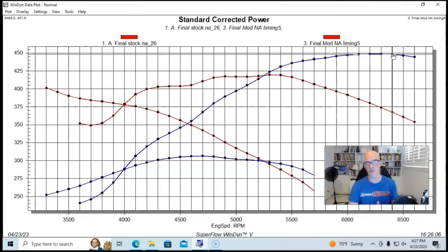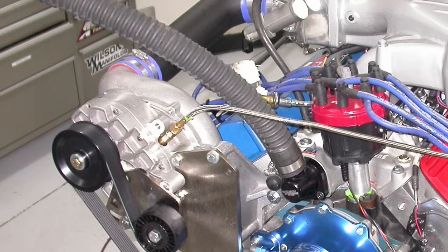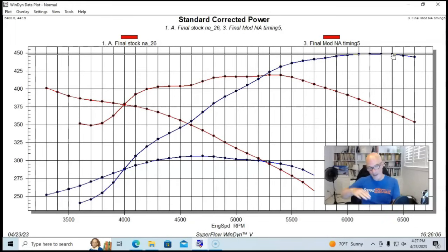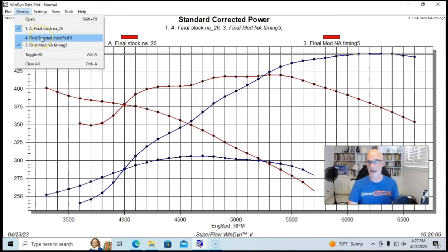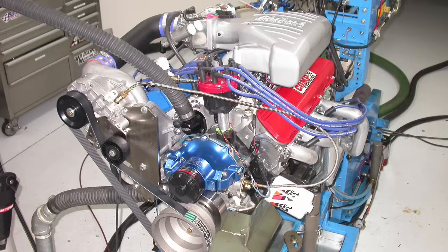Because as you go out in engine speed, they just keep making more and more boost and more and more power, which is kind of cool. So here's what happened when we added our Vortech supercharger back to our modified version. This was run at about eight pounds out here at 6300 or 6400 RPM.